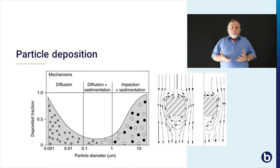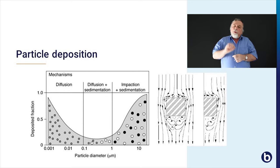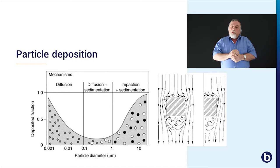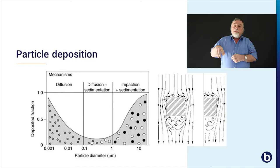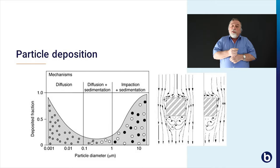Particle deposition: on the left you see a diagram showing the relation between particle size and deposition of particles. For particles larger than one micrometer, deposition occurs by gravitation or by impaction. For particles smaller than one micrometer, we enter the area where particles are moved by Brownian motion and by diffusion, and they also deposit on surfaces.